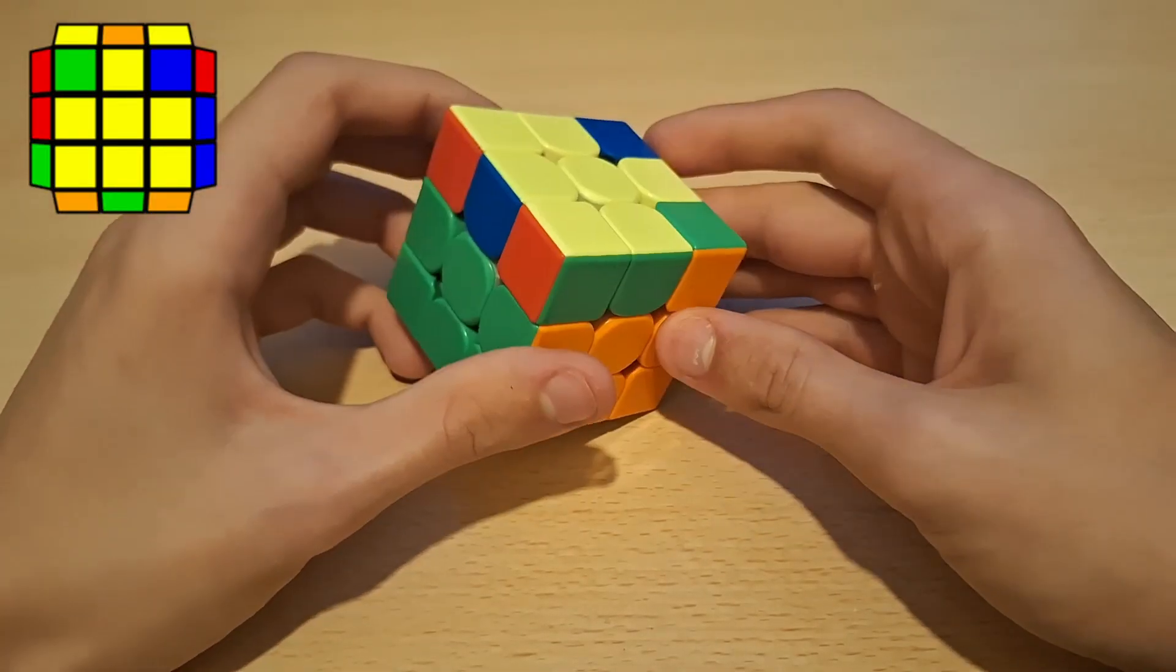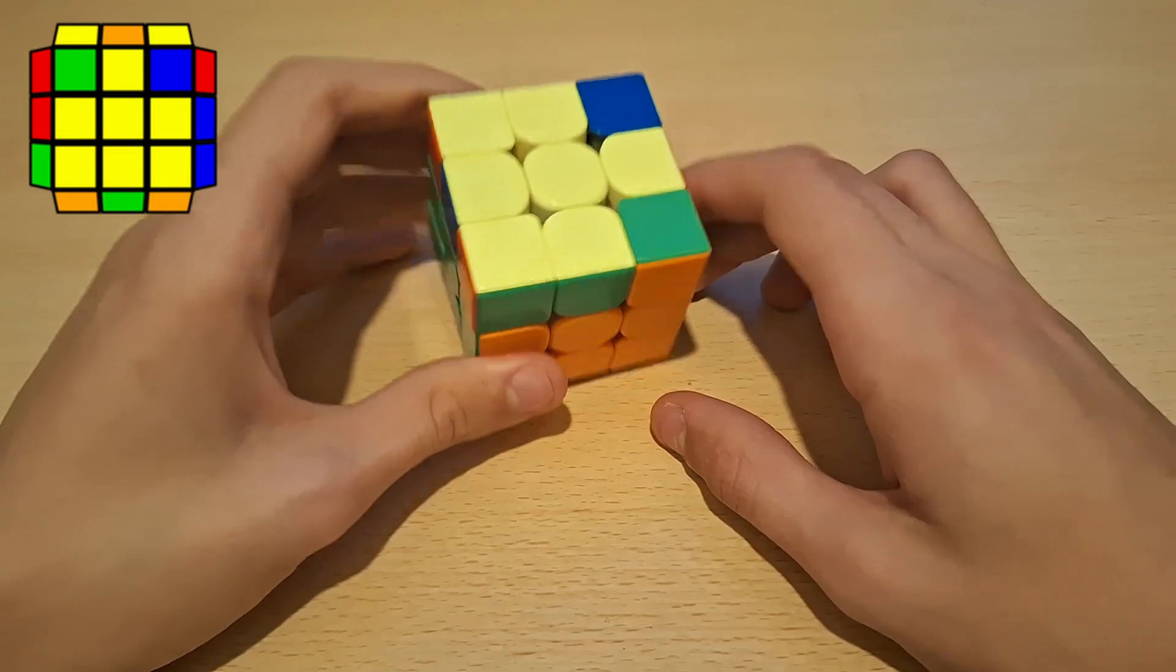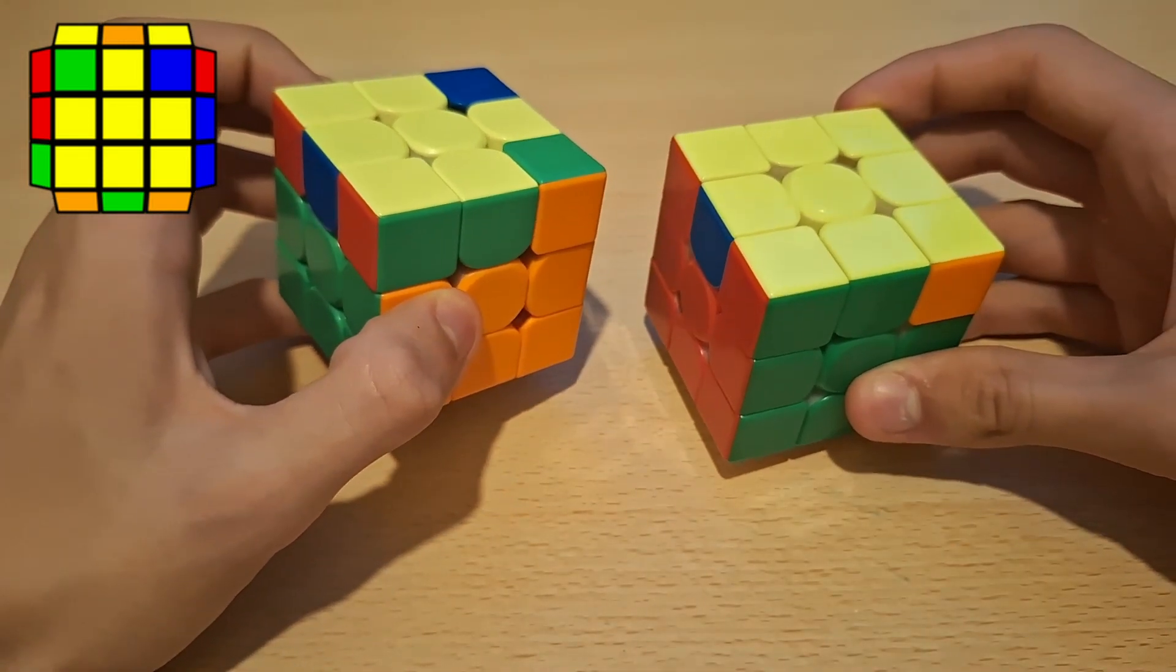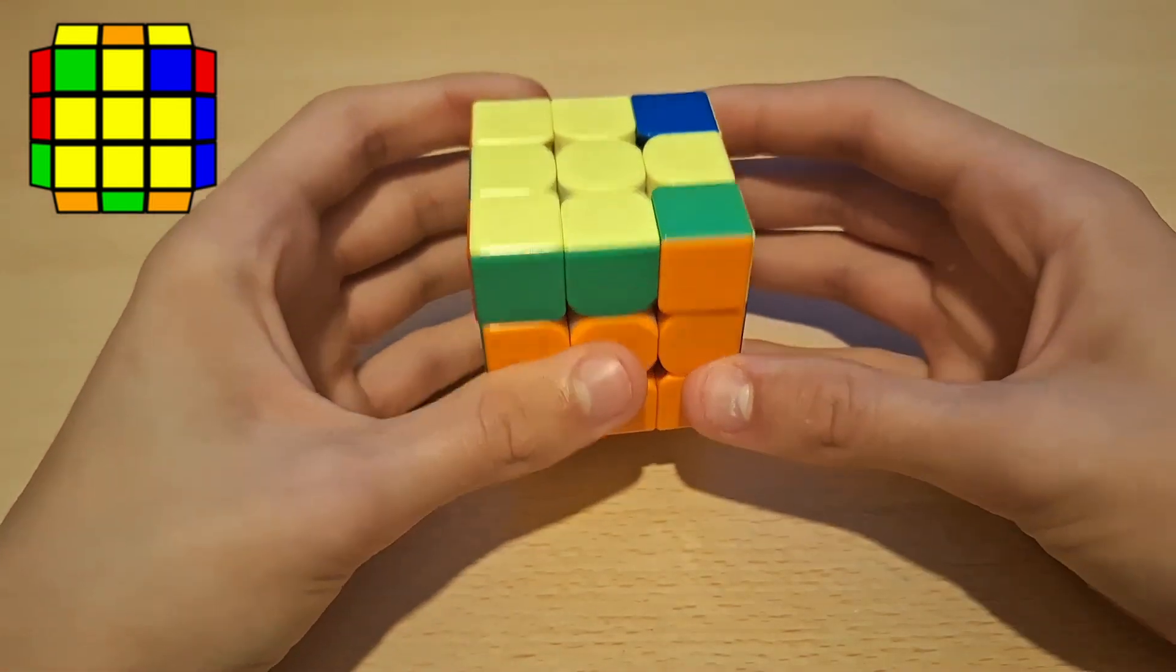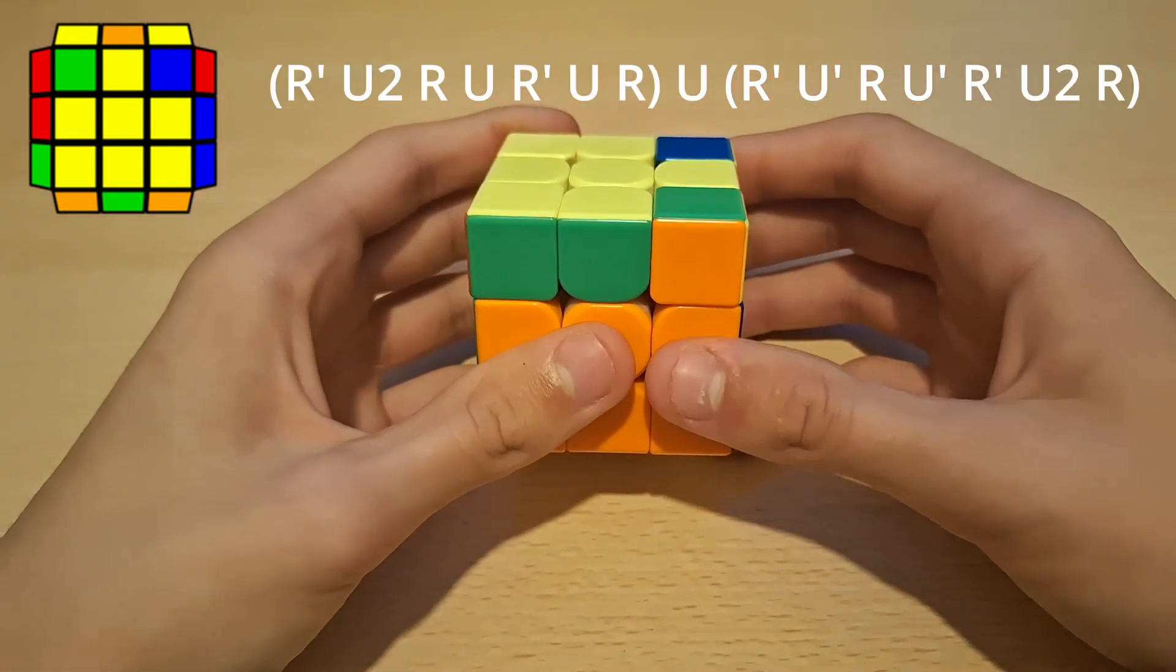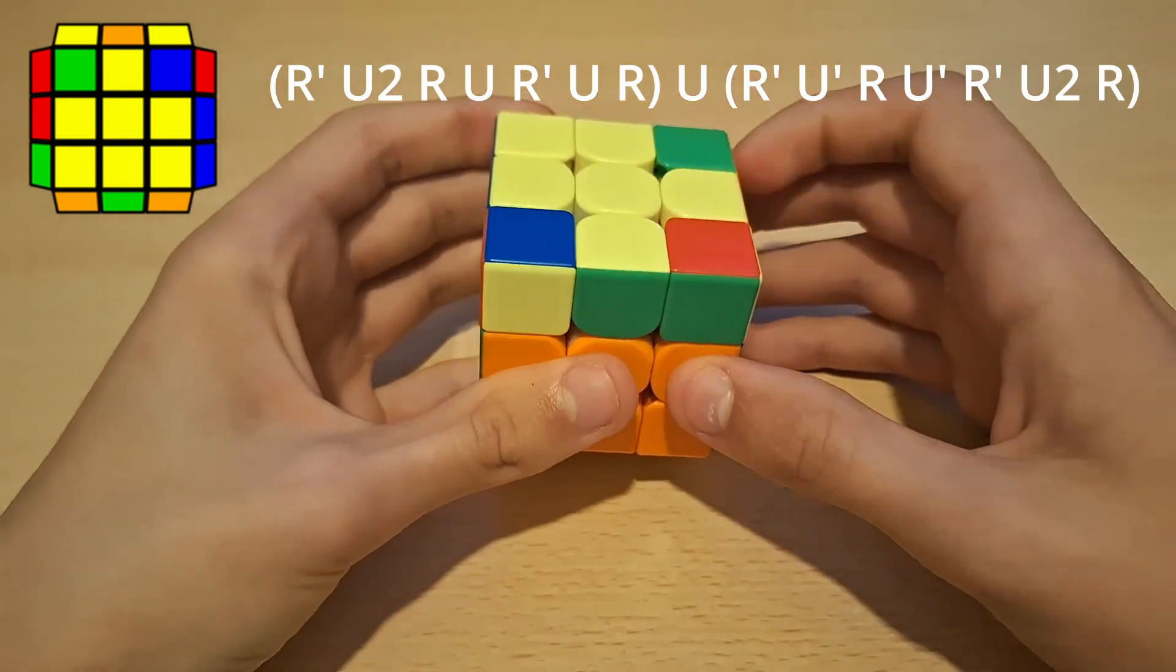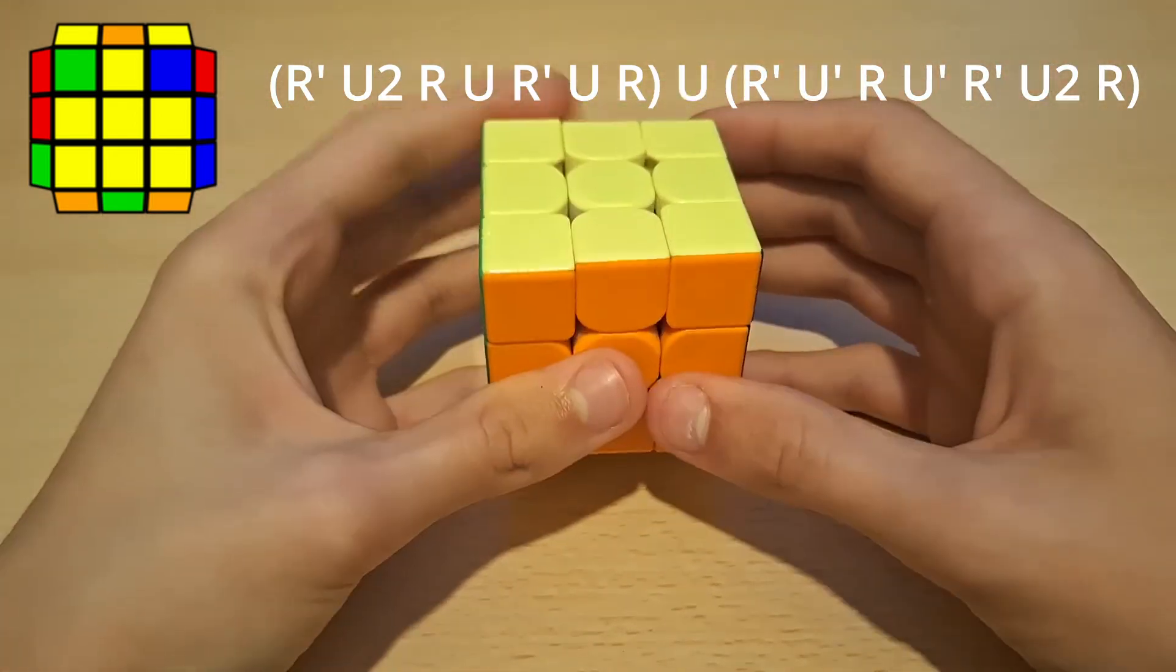So the next ZBLL we execute from this angle and so I recognize this from this angle. This kind of looks like an R-perm as you can see. And what I do from here is first of all a back anti-sune, so like this. And then a U and then just this sune.